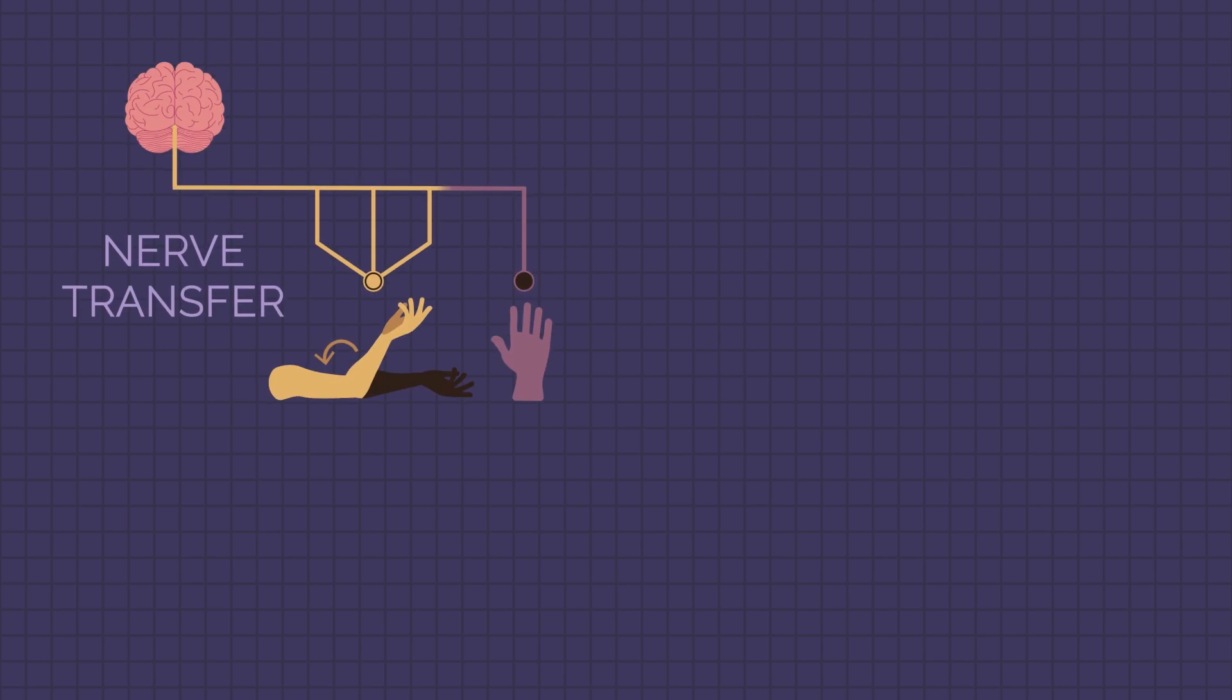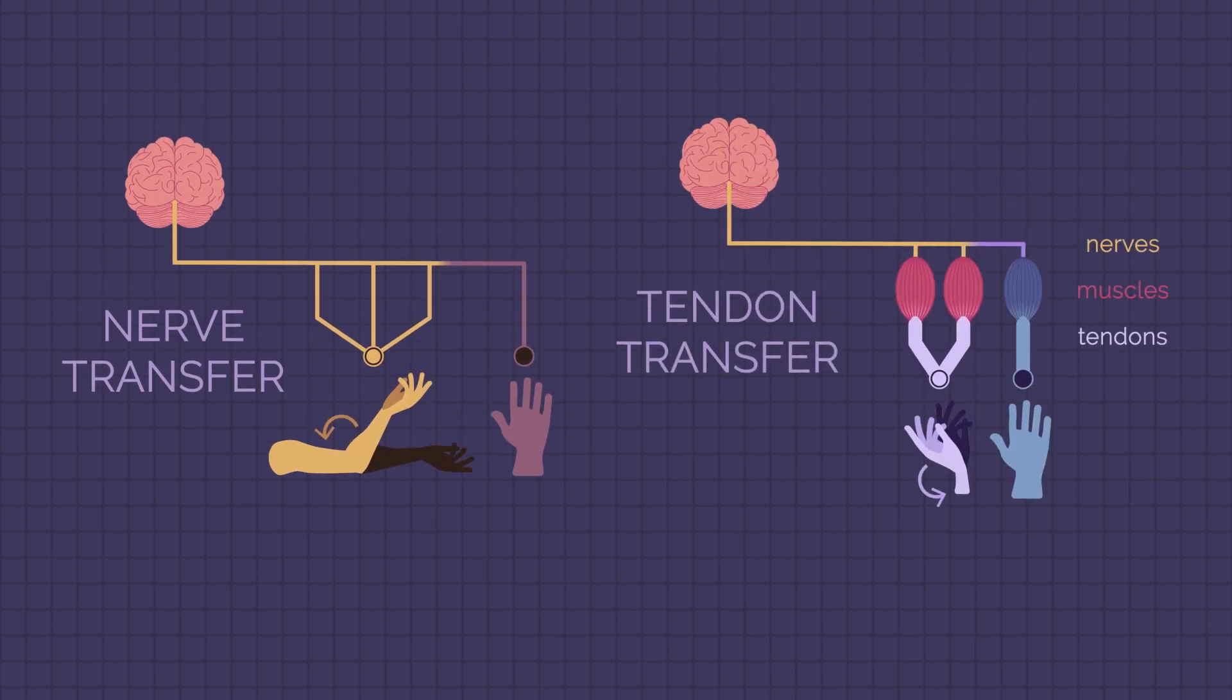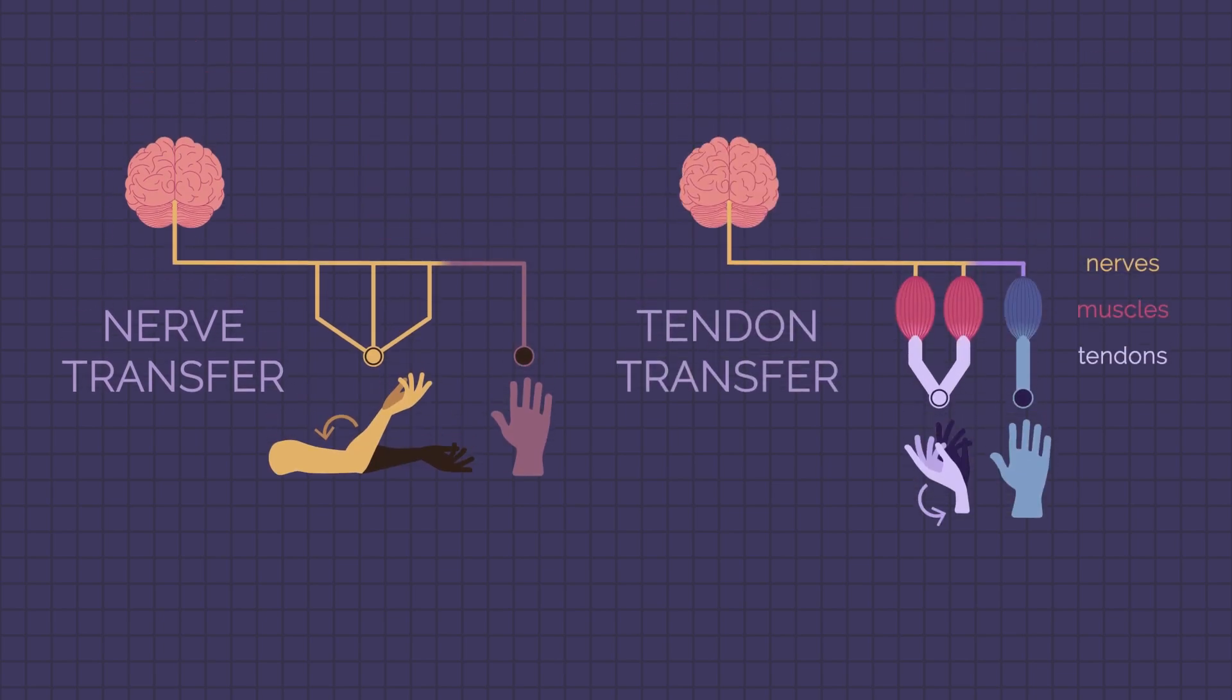We have learned that both nerve transfer and tendon transfer surgeries move working connections to non-working connections, and both can help improve arm and hand movements.